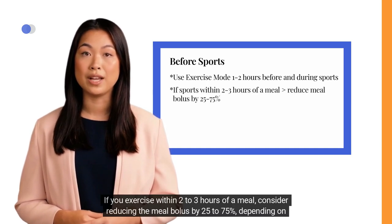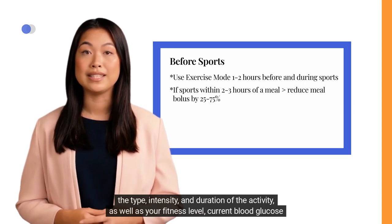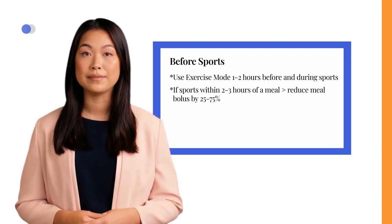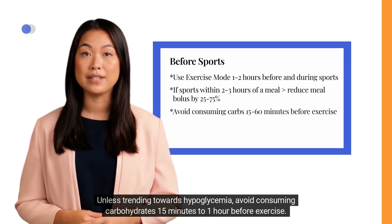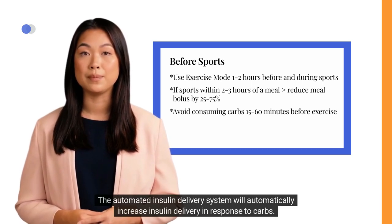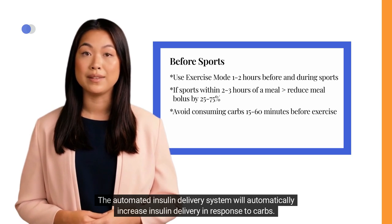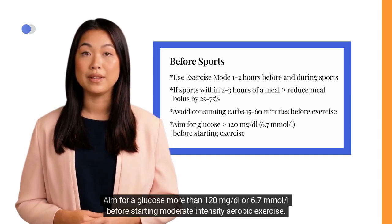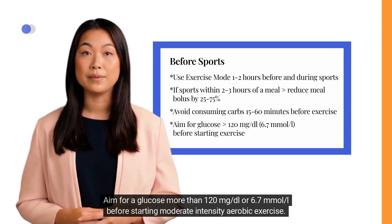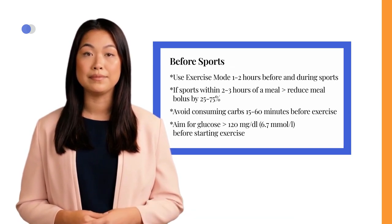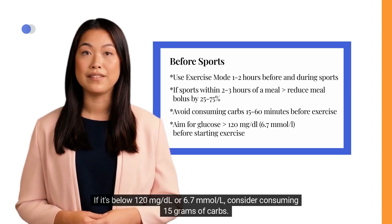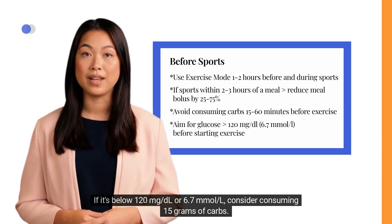If you exercise within 2 to 3 hours of a meal, consider reducing the meal bolus by 25 to 75%, depending on the type, intensity, and duration of the activity, as well as your fitness level, current blood glucose level, and insulin on board. Unless trending towards hypoglycemia, avoid consuming carbohydrates 15 minutes to 1 hour before exercise, as the automated insulin delivery system will automatically increase insulin delivery in response to carbs. Aim for a glucose above 120 mg/dL or 6.7 mmol/L before starting moderate-intensity aerobic exercise. Check your glucose 10 minutes before the start; if it's below 120 mg/dL, consider consuming 15 grams of carbs.